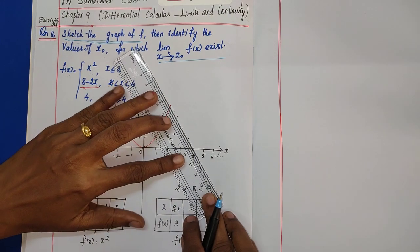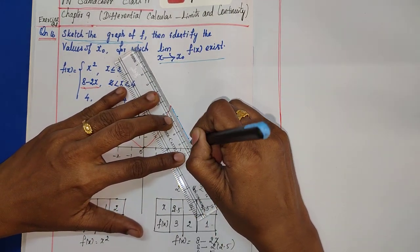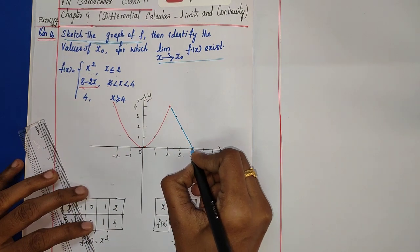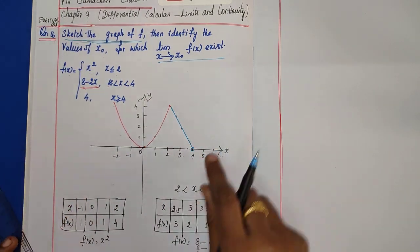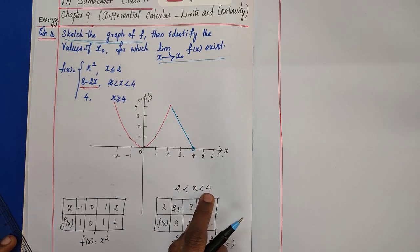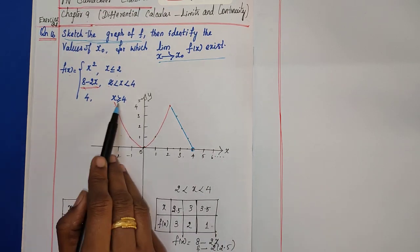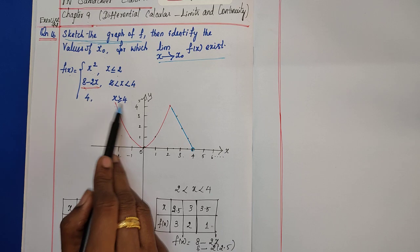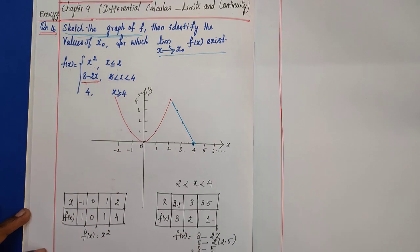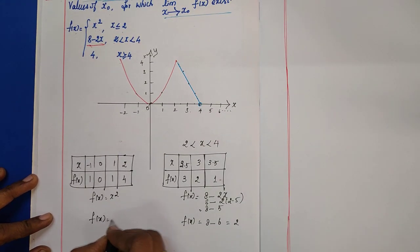Through these points we draw a straight line. The endpoint at x = 4 is an open point because x is strictly less than 4. For the last piece, when x ≥ 4, f(x) = 4, so we draw a horizontal line at y = 4 starting from x = 4 (closed endpoint) and extending rightward.